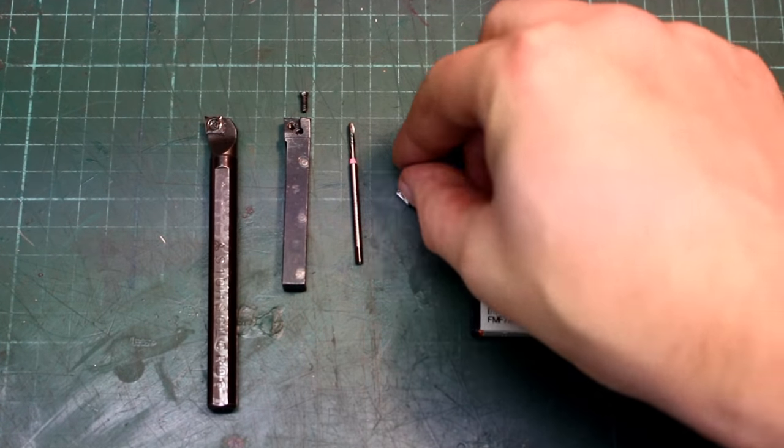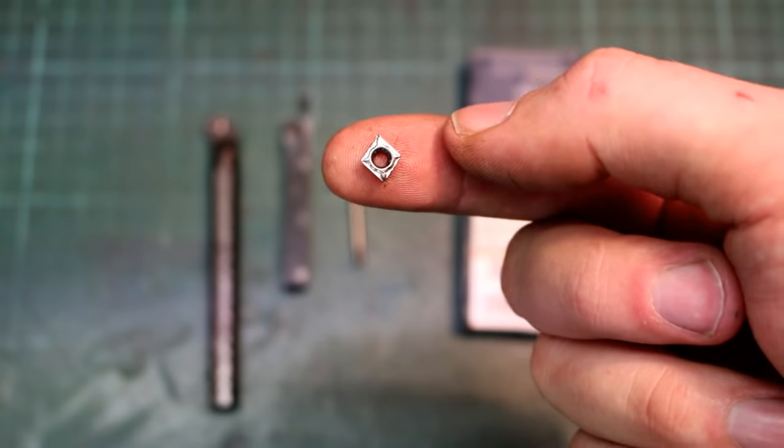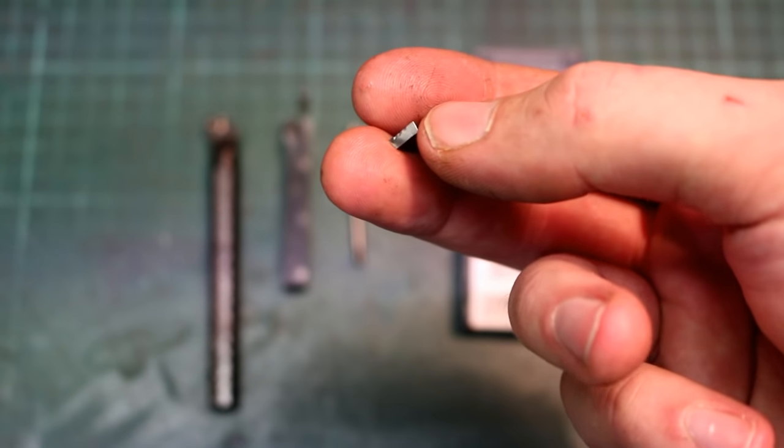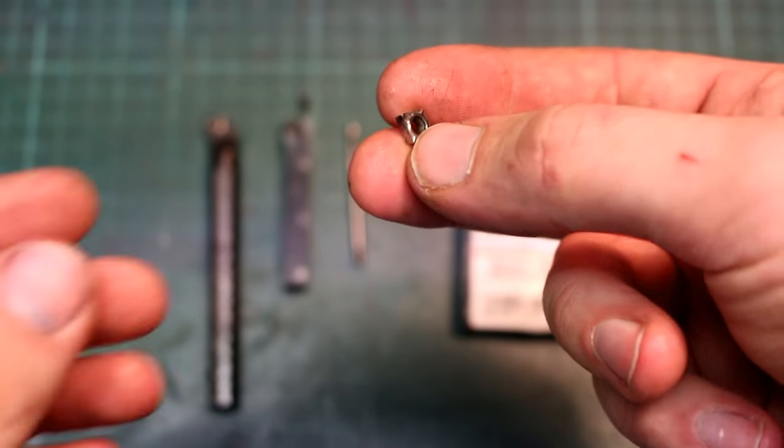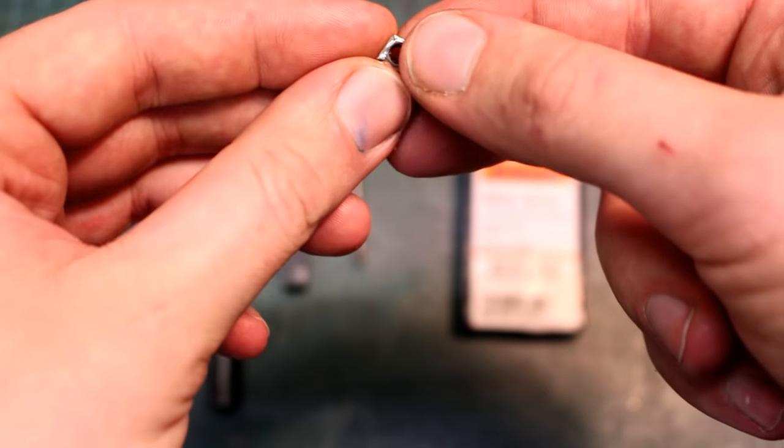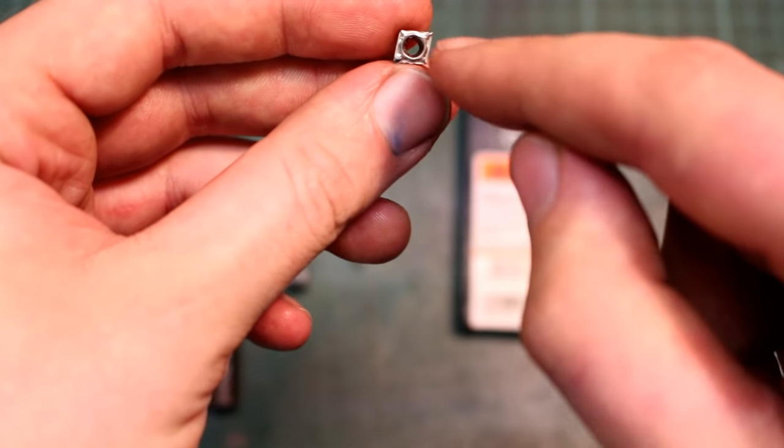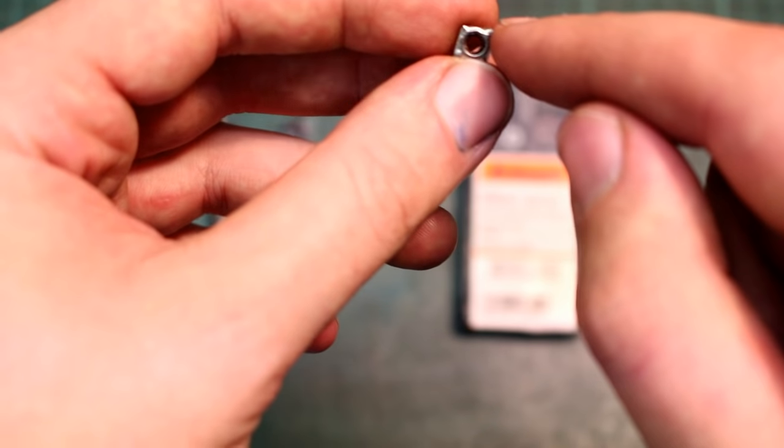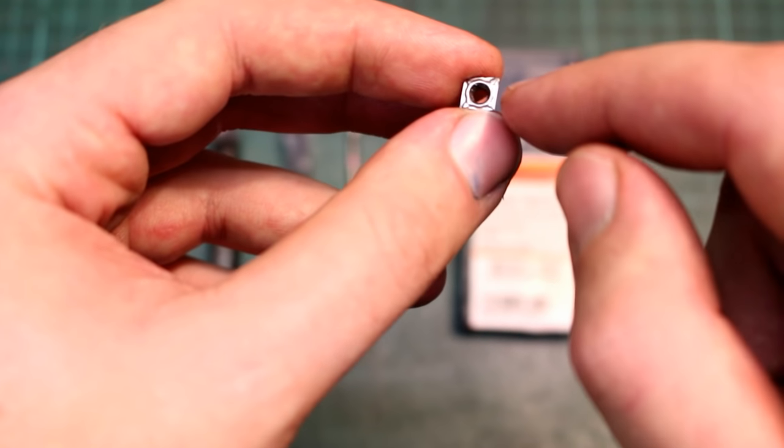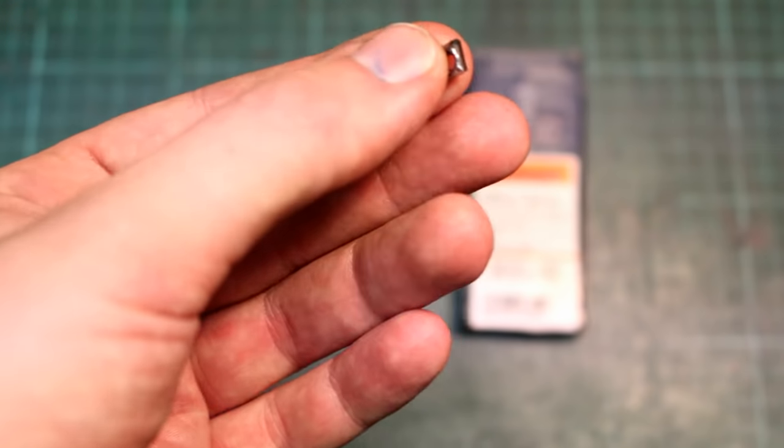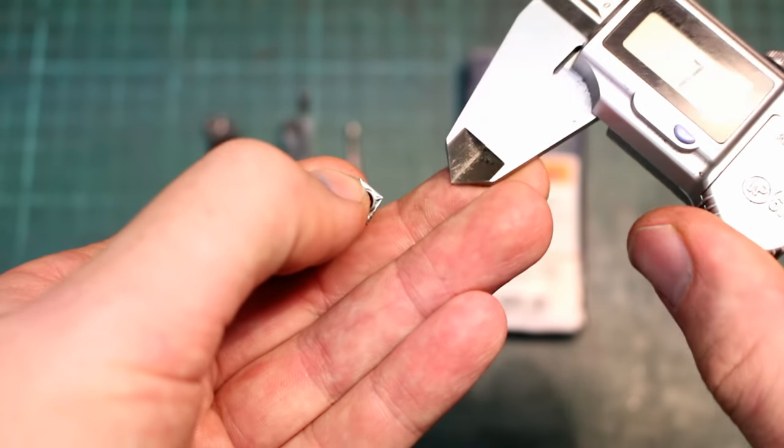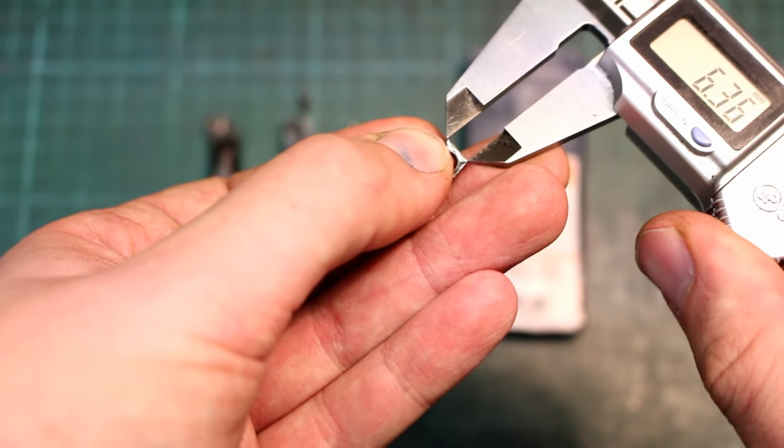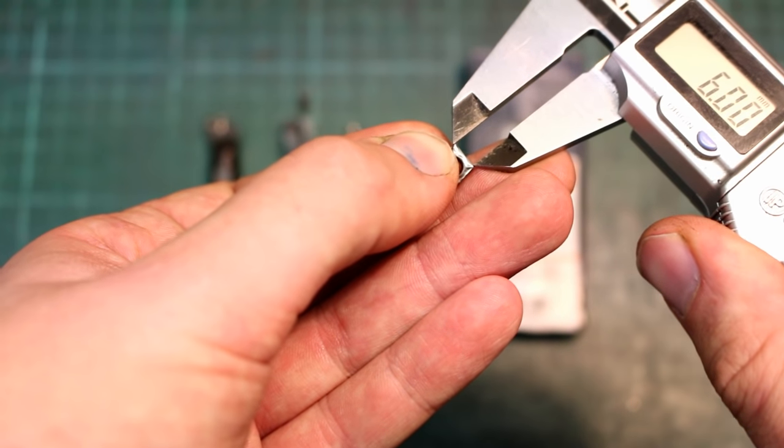These were the inserts I was talking of and these are CCMT0602 and that means this are the elements. C is the shape which is this parallelogram with 80 degrees corner radius and the 06 is the length of one of the sides. These are roughly six millimeters when you measure them properly on the microscope.